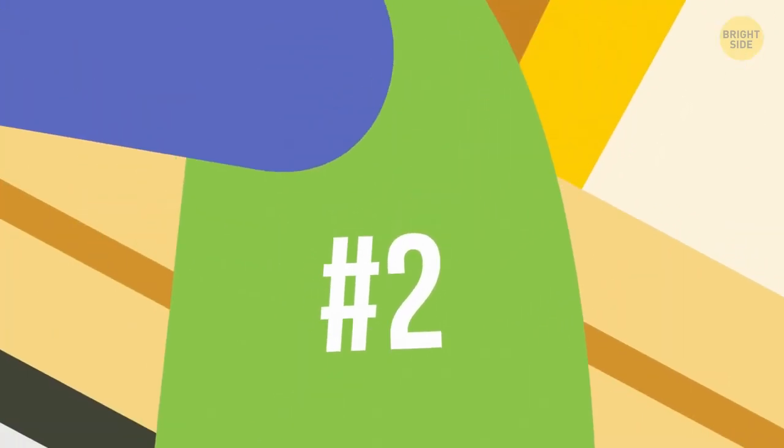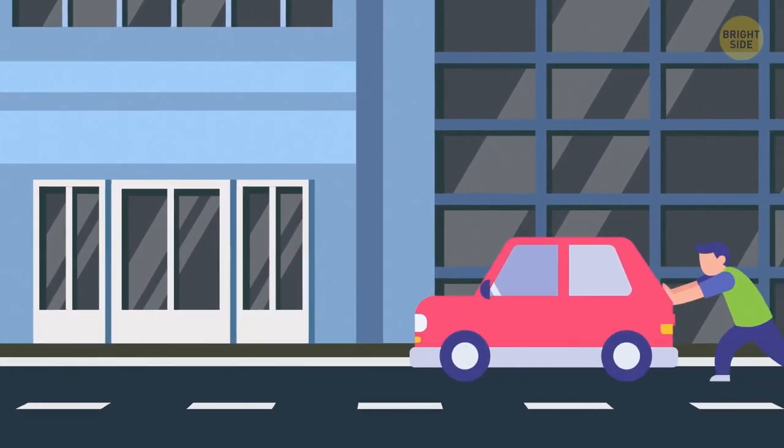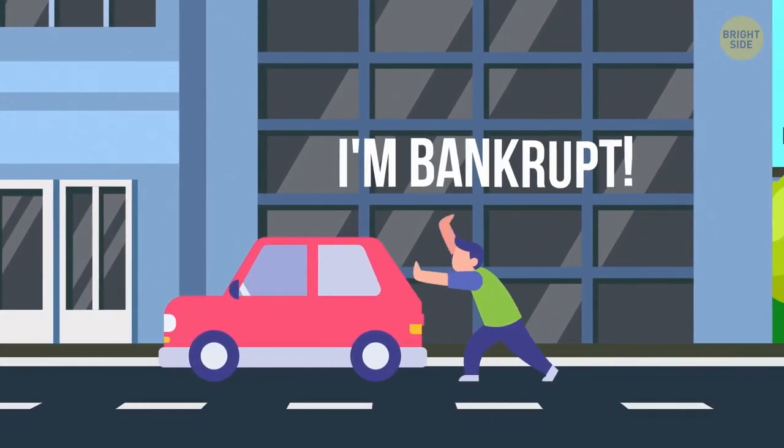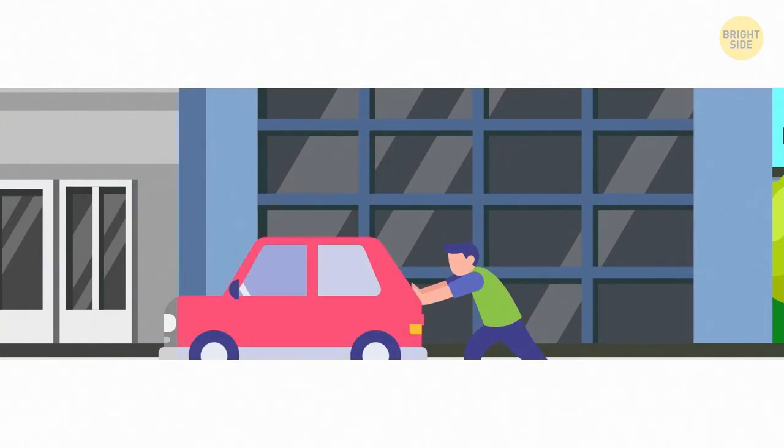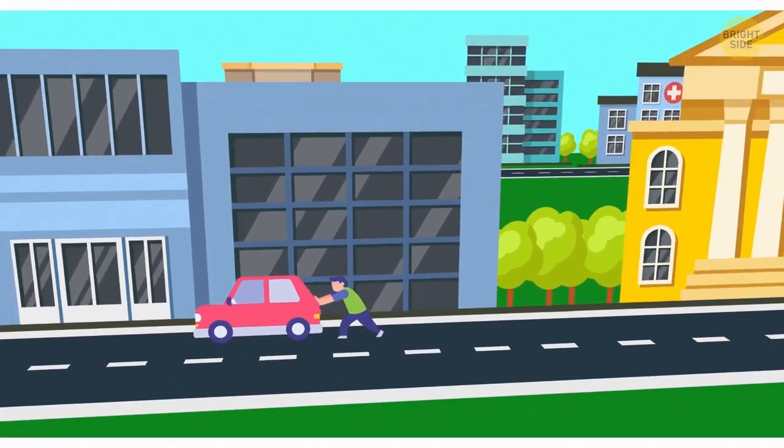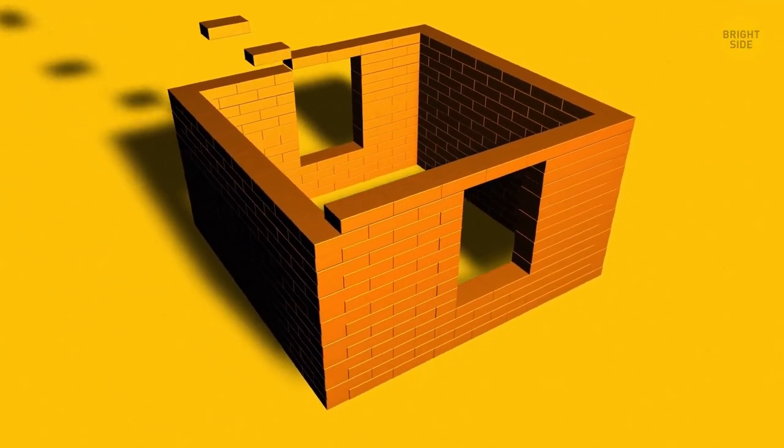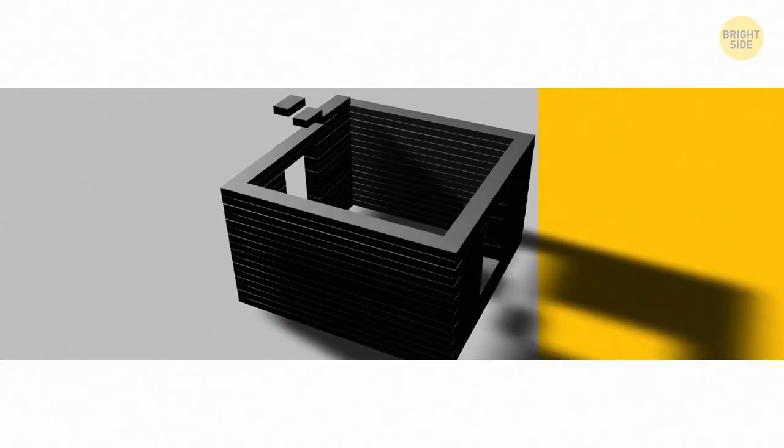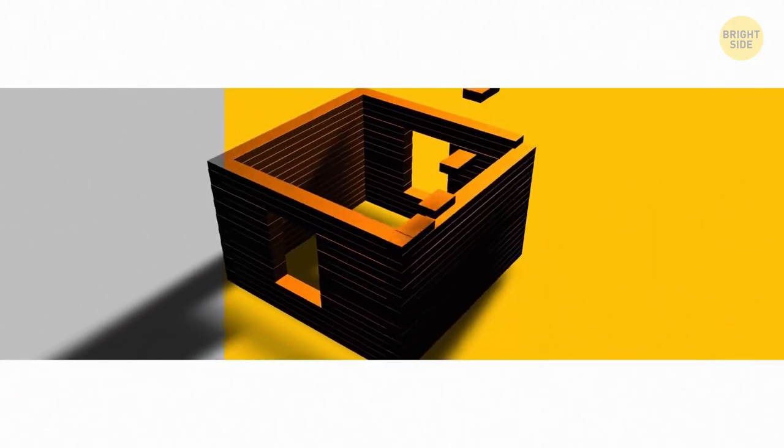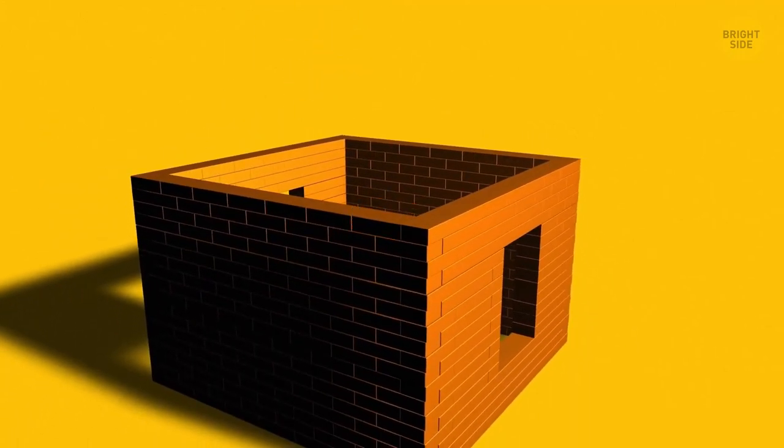2. A man is pushing his car along the road and finally reaches a hotel. He shouts, I'm bankrupt. What's happening? He's playing Monopoly. 3. How many bricks does it take to complete a building? Just one. It'll be the last one.